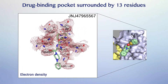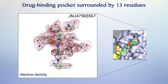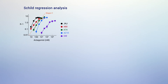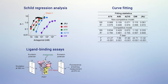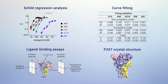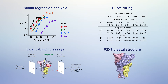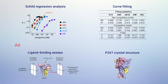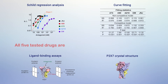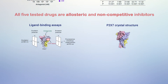Using Schild regression analysis, curve fitting with known models of competitive and non-competitive inhibition, ligand binding assays, and the crystal structures of P2X7 obtained in the presence of both an agonist and an antagonist, we demonstrated that all five tested drugs are allosteric and non-competitive inhibitors.